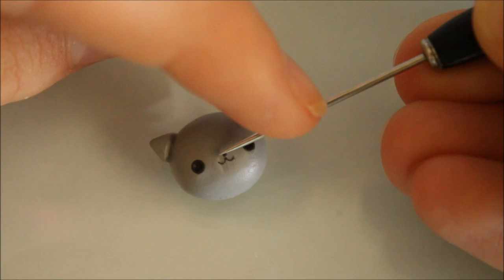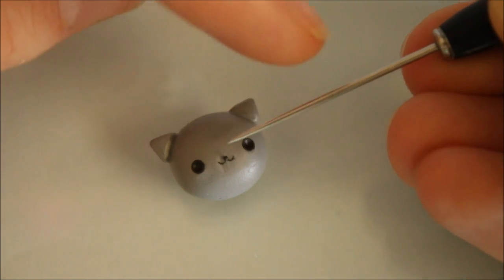Now roll out some even thinner black clay to create the mouth. For the nose I'm shaping a tiny triangle and then attaching it on.